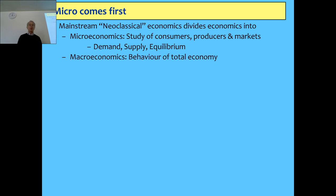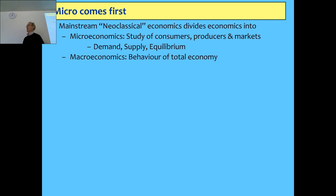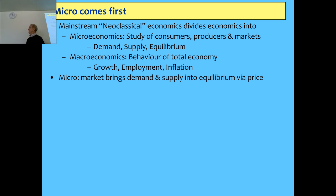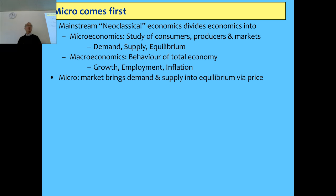One essential element of the mainstream is that microeconomics comes first. You're doing micro to some extent in a couple of other courses — supply and demand, all that sort of stuff. That's the foundation of how they think. They have the study of consumers, products, markets, demand, supply, and equilibrium. Macroeconomics is the behaviour of the total economy — the aggregate. They originally did not believe there was such a thing; they thought if you know the micro, you know the entire economy. They saw the aggregate as a very simple sum of what was happening at the micro level. Now we talk about growth, employment, inflation, and income distribution as well.